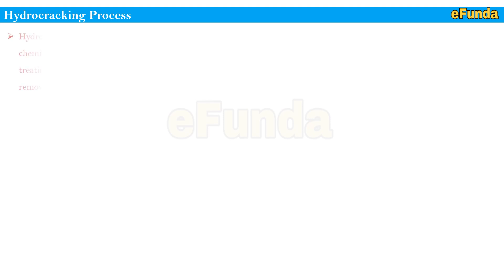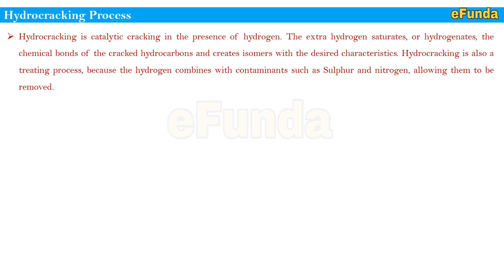Hydrocracking is a catalytic process widely used in refineries to convert heavy oil fractions into high-quality middle distillates and light products such as diesel, naphtha, and LPG. It is catalytic cracking in the presence of hydrogen — the extra hydrogen saturates or hydrogenates the chemical bonds of the cracked hydrocarbons, creating isomers with the desired characteristics. Hydrocracking is also a treating process because hydrogen combines with contaminants such as sulfur and nitrogen, allowing them to be removed.